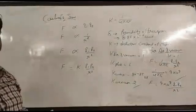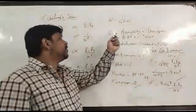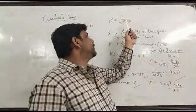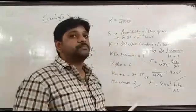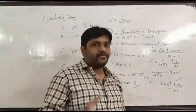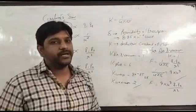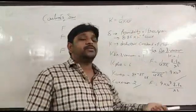There is a constant k. The value of k is equivalent to 1 upon 4 pi epsilon not. Epsilon not means permittivity of free space having value of 8.85 times 10 to the minus 12, a universal constant.